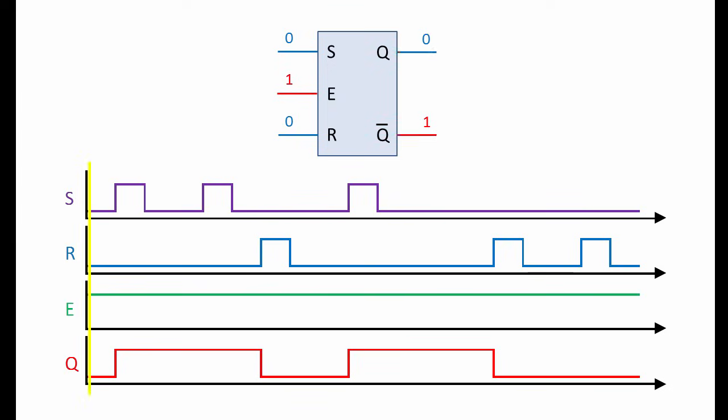At the time indicated by the vertical yellow line, the output Q is low. S and R are also both low, but E is high, so the latch is enabled. In fact, in this diagram, the latch is always enabled, so it's going to behave exactly like a simple SR latch without steering gates.